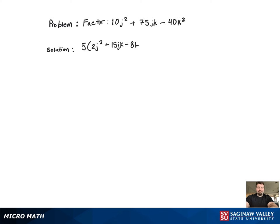Now, we see that the 2 coefficient of the j squared term means that it'll have to be 2j and 1j. And now we just need to figure out the coefficient of the k variable in the binomials. So we have two options, either 8 and 1, or 4 and 2.